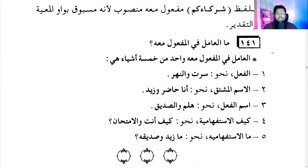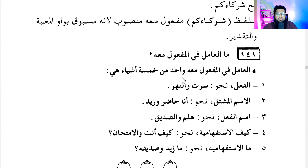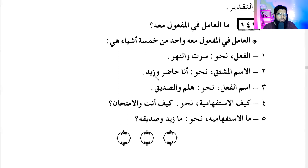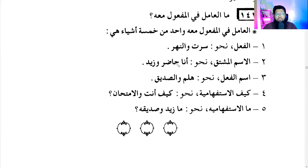Question number 141: what is the governing agent of maf'ul ma'ahu? It could be either of five things. It could be the verb — for example, 'I traveled along the river.' It could also be a noun which does the action of a verb.